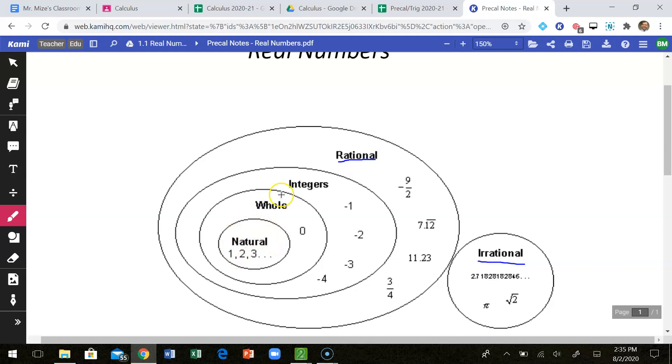So keep in mind, each one inside is still inside the next oval bigger than that. So integers, we've got all these positive and negative whole numbers. And then we have inside there, those are all rational numbers, but then we have some rational numbers that don't belong in those subsets.